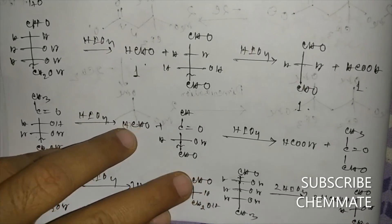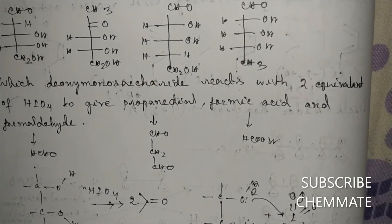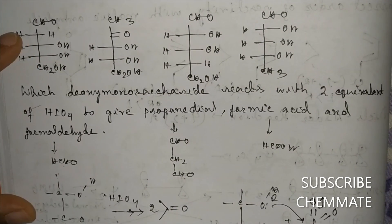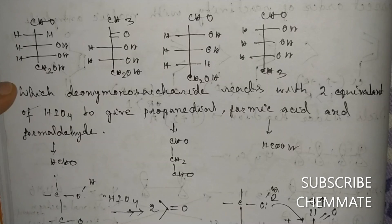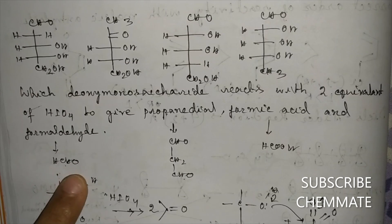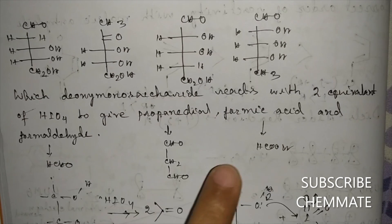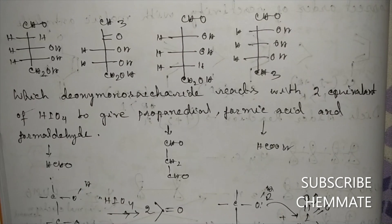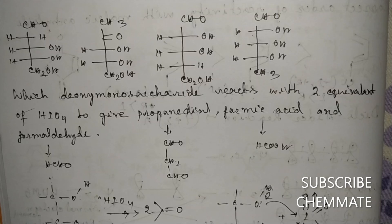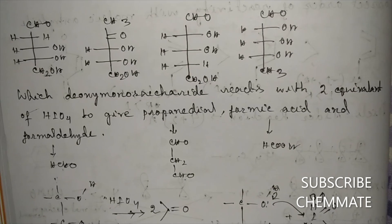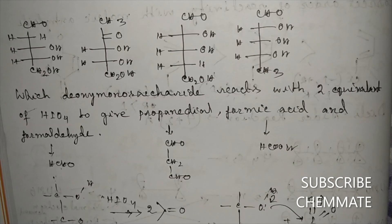So this is the product analysis. Our answer is that this deoxy monosaccharide, when reacted with 2 equivalents of HIO4, gives HCHO (formaldehyde), CHO-CH2OH (propenedial), and HCOOH (formic acid). If you have any doubt regarding this video, please let me know in the comments. Subscribe for more interesting videos — thank you and have a good day.